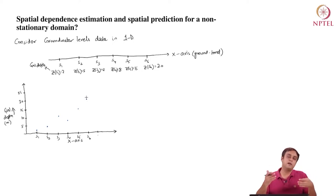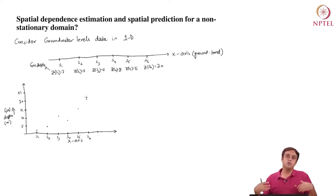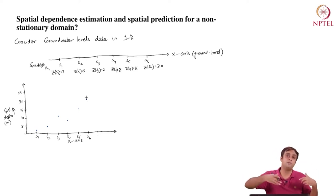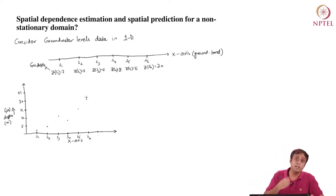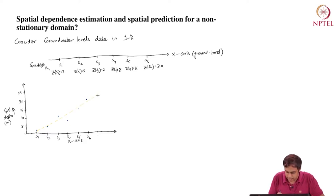As I saw when I looked at the numbers, as I move from S1 to S6, the groundwater depth is sort of rising — the groundwater situation is becoming worse and worse. When I plot this data, I'm able to work out a trend between these values. If I plot this, I get something like a rising trend — this is the spatial trend in groundwater data.